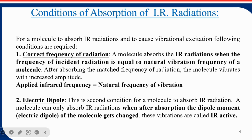There are two conditions required for a molecule to absorb IR radiation. The first is the correct frequency of radiation — the applied IR frequency must be equal to the natural frequency of vibration of the molecule. The second condition is a change in electric dipole moment: a molecule can only absorb IR radiation when, after absorption, its dipole moment changes. These vibrations are called IR active vibrations.